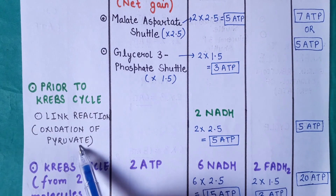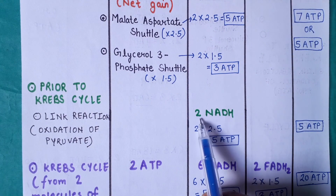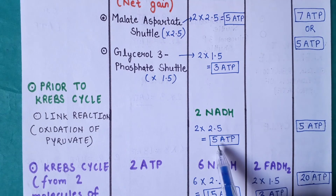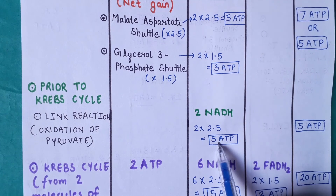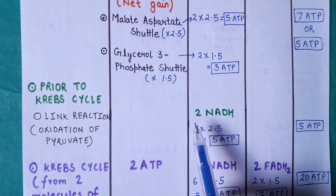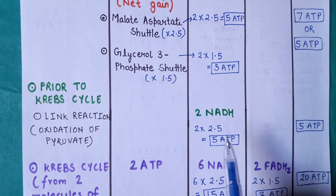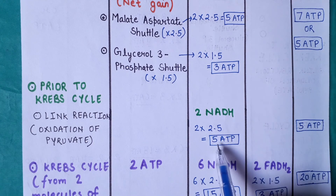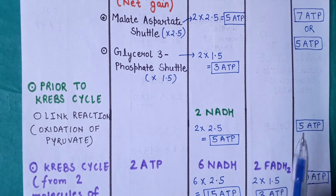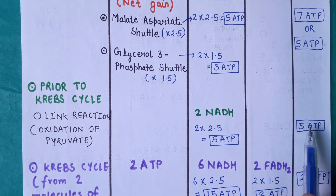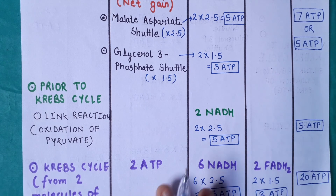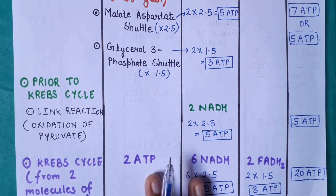In the oxidation of pyruvate, there is a gain of 2 NADH. One molecule of NADH gives 2.5 ATP, so two molecules of NADH give 5 ATP. Therefore, in pyruvate oxidation there is a net gain of 5 ATP.